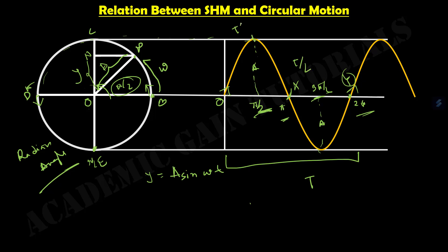So this is our half time period T by two, and that will be T by four. If I add T by two with T by four, I get three T by four. So the whole equation covers five key points — one, two, three, four, five — and I have understood the relation.